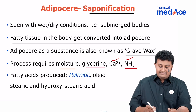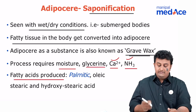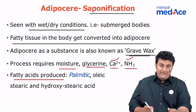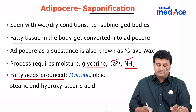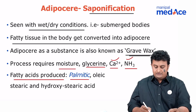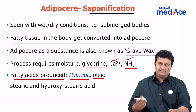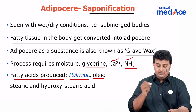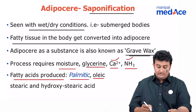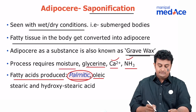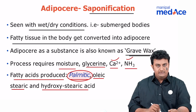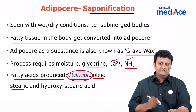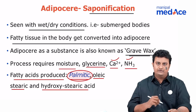The fatty acids that get produced — mainly, the most important one you need to know is palmitic acid. There's obviously also going to be oleic acid, stearic acid, hydroxystearic acid, but the main one to remember is palmitic acid. So remember: palmitic, oleic, stearic, and hydroxystearic.